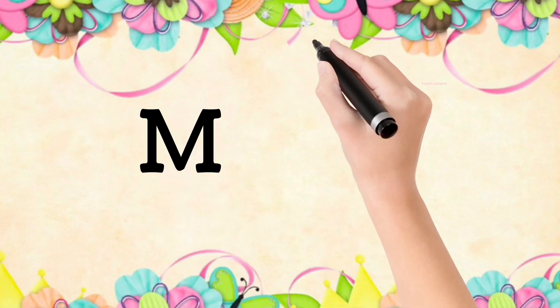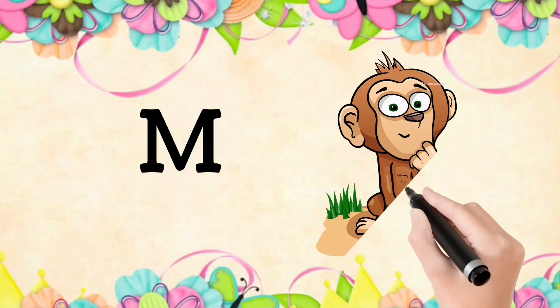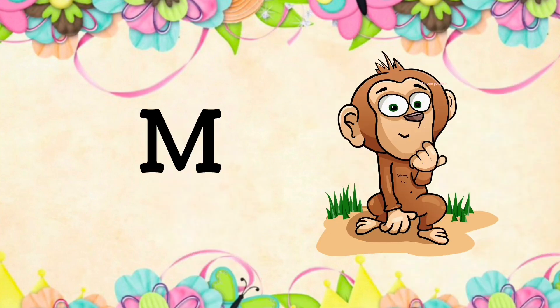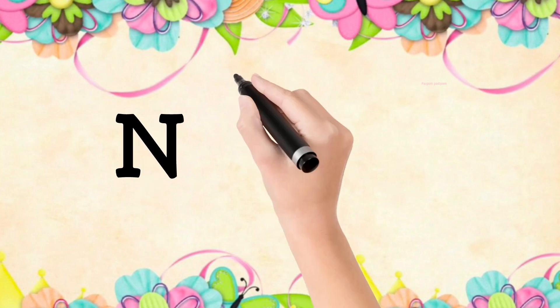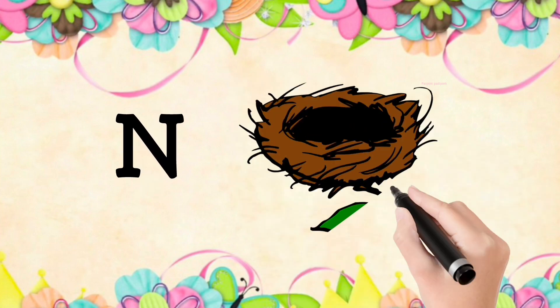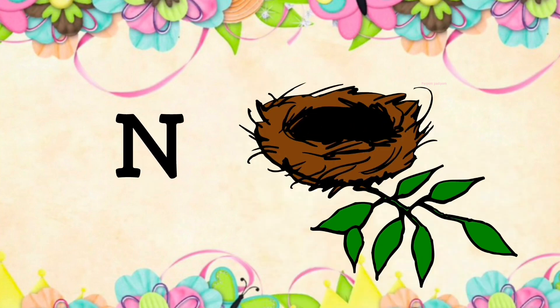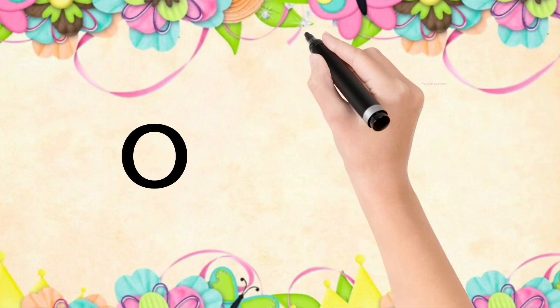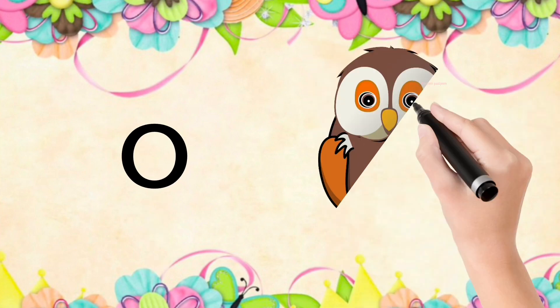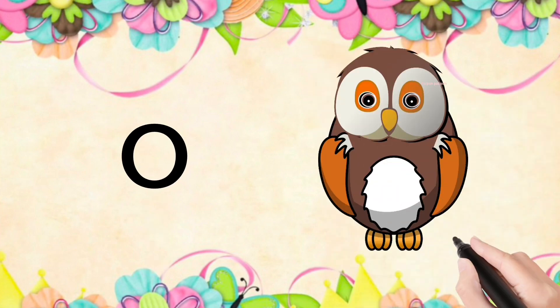M is for monkey, N is for nest, O is for owl.